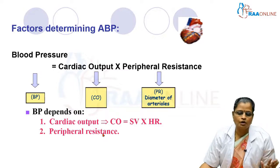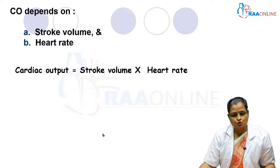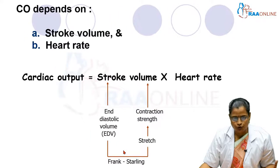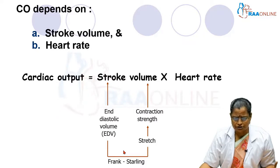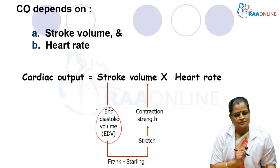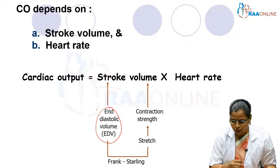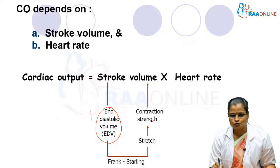Cardiac output depends on stroke volume and heart rate. Stroke volume in turn depends on end-diastolic volume and the force of contraction of the heart. According to Frank-Starling's law, the force of contraction is directly proportional to the initial length of the muscle fiber within physiological limits, and the end-diastolic volume determines the initial length of the muscle fiber.